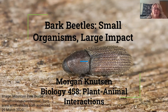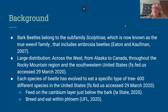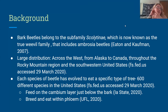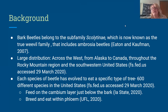On this cover slide, you see a mountain pine beetle, Dendroctonus ponderosae. Just to give you a little background, bark beetles are not a specific species of beetle — they're a larger category that has many, many species underneath them. Bark beetles belong to the subfamily Scolytinae, which is now known as the true weevil family, and this includes ambrosia beetles. They have a very large distribution, found across the West from Alaska to Canada, throughout the Rocky Mountain region, and the Southwestern United States. Each species of beetle has evolved to eat a very specific type of tree, and there are about 600 different species in the United States. They feed on the cambium layer, located just below the bark, and they breed and eat the phloem.